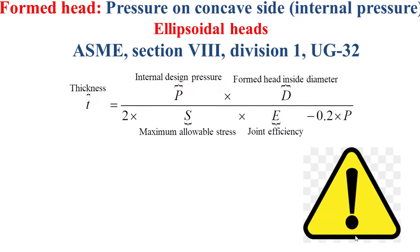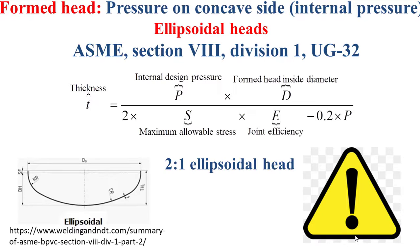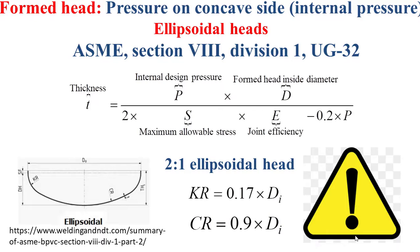Pay attention: this formula is valid in the case of a 2-to-1 ellipsoidal head, and we can carry out this proportion using a knuckle radius equal to 0.17 times the internal diameter of the formed head skirt and a crown radius equal to 0.9 times the internal diameter of the formed head skirt.